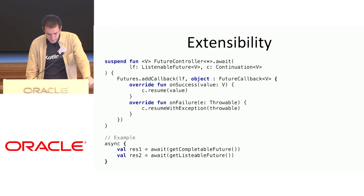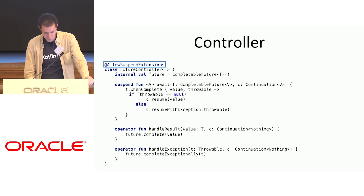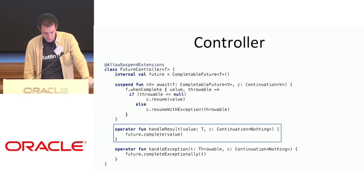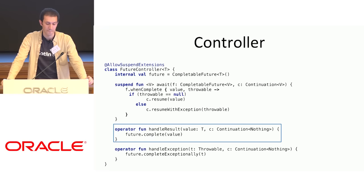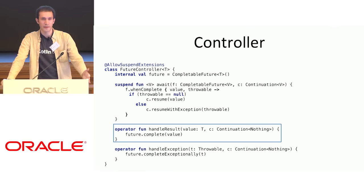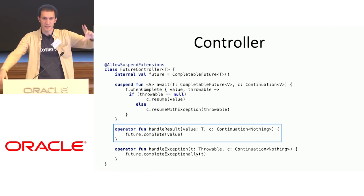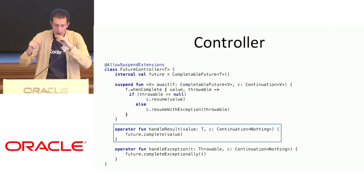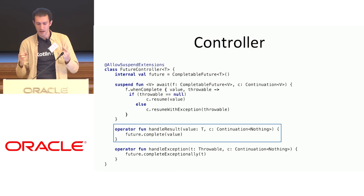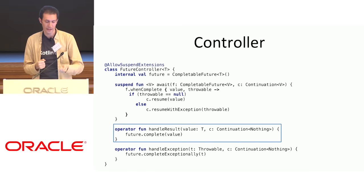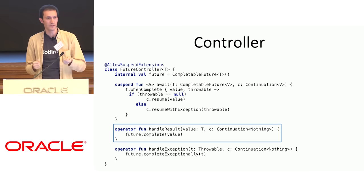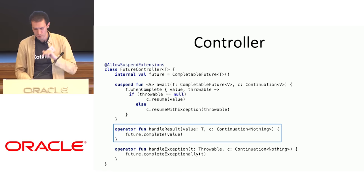The question is how handleResult and handleException are called. When the compiler sees a coroutine, it looks for return points, and at every return point there is a call to handleResult injected. I'll show handleException later.